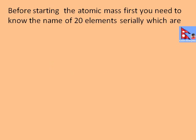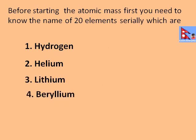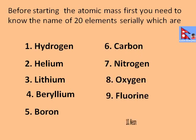Before starting the atomic mass, first you need to know the names of the first 20 elements serially, which are: hydrogen, helium, lithium, beryllium, boron, carbon, nitrogen, oxygen, fluorine, neon.